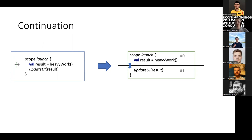Let's take an example. Imagine we have a very simple coroutine that calls some heavy work suspend functions and then updates the UI using the result. What the Kotlin compiler does is it divides our coroutine into several blocks — several parts — and adds a label to them, which is just an integer number. The first part is zero, the next part is one. The division points are suspend calls. If we have one suspend function called in a coroutine, there will be two parts; two suspend functions means three parts, and so on.